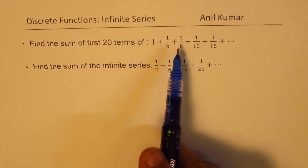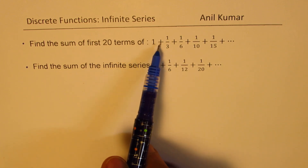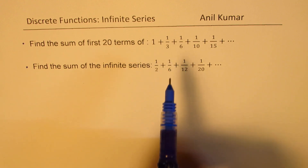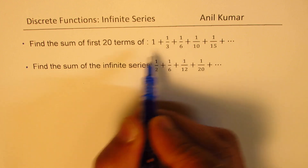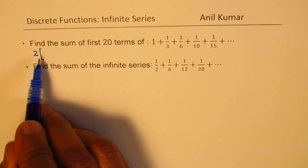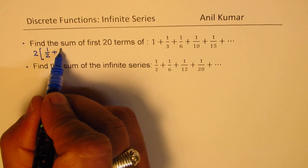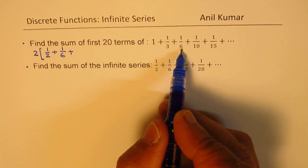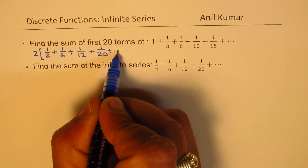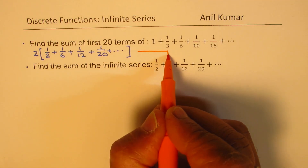Some of you must have noticed that they are actually the same series. In the first series, if I take 2 common — that is, divide all terms by 2 and multiply by 2 — dividing by 2 gives: 1/2 + 1/6 + 1/12 + 1/20 and so on. Do you see that? These two series are exactly the same.